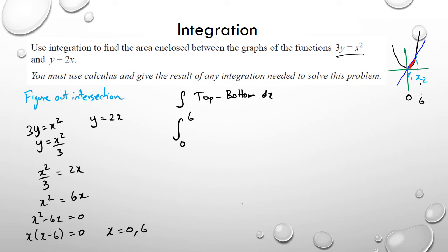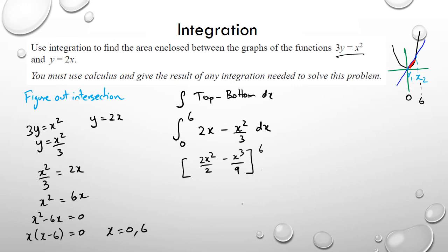The top equation is the straight line, 2x, and the bottom is the parabola written as y equals x squared over 3. So the area equals the integral from 0 to 6 of 2x minus x squared over 3 dx. You always need to have the equations as y by itself. Integrating this gives 2x squared over 2 minus x cubed over 9 evaluated between 6 and 0, which simplifies to 6 squared minus 6 cubed over 9.